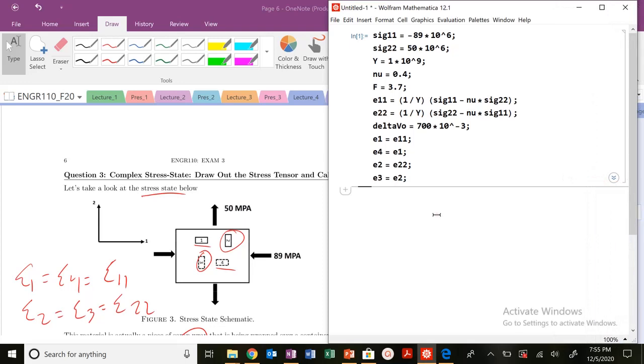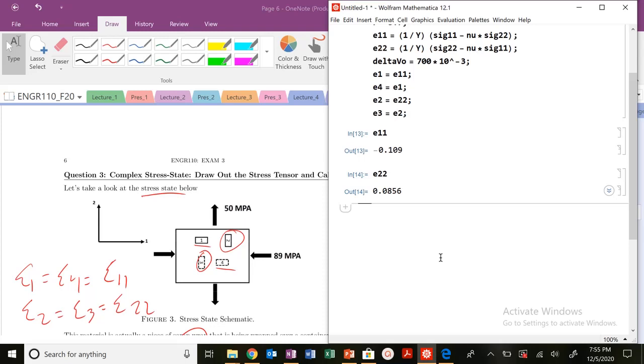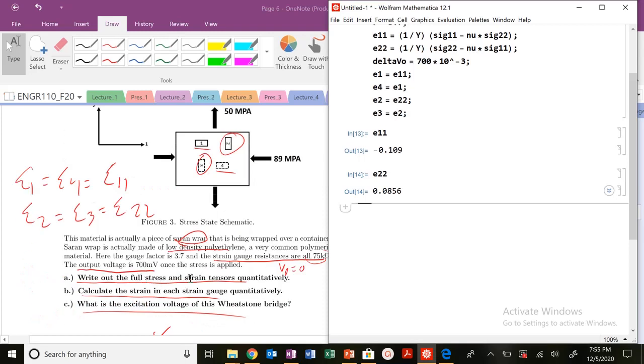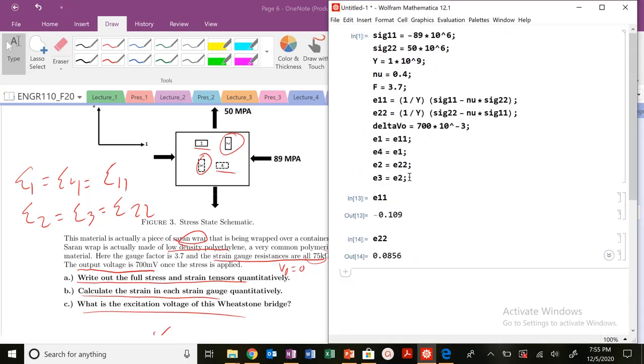So, we actually already know our stress state. So I could actually write out E11, E22. We have those values. So that's kind of solving full stress and strain tensors. Done. We're also in principle stress state as well. What's the strain in each gauge quantitatively? It's this.